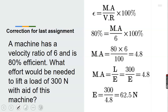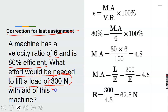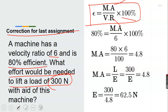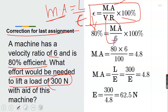The first assignment: a machine has a velocity ratio of 6 and is 85% efficient. What effort will be needed to lift a load of 300 Newton with the aid of this machine? This is the relationship we established between mechanical advantage, velocity ratio, and efficiency. Before we calculate for effort, we also established that mechanical advantage equals load over effort, so we can calculate load or effort directly.